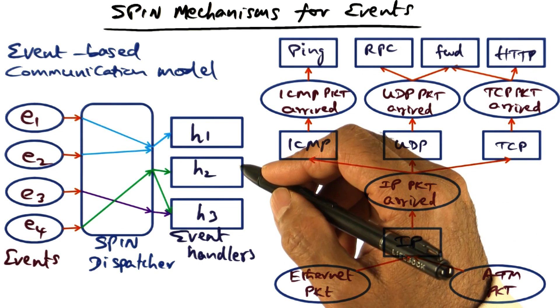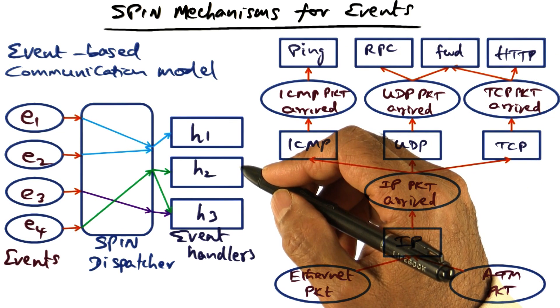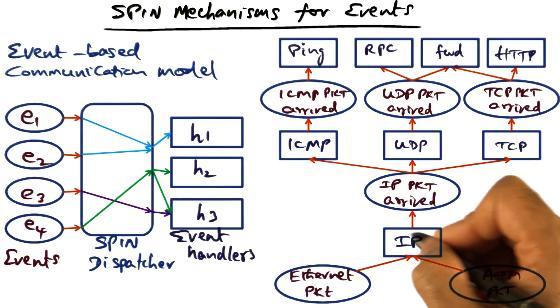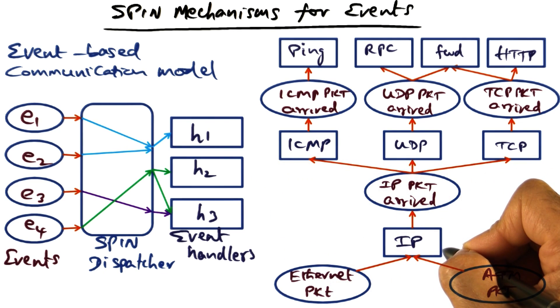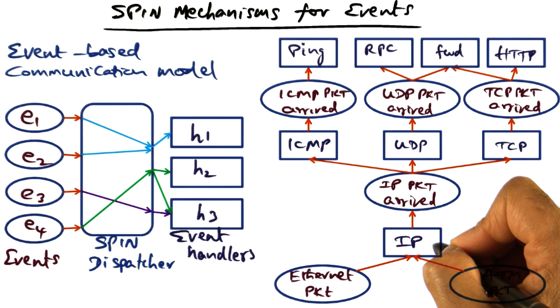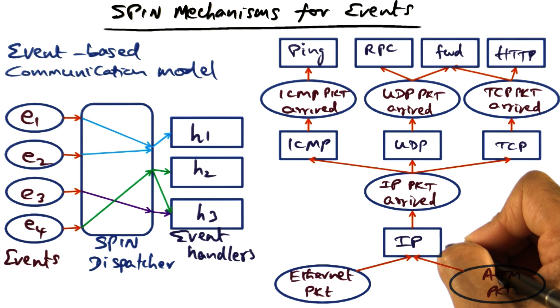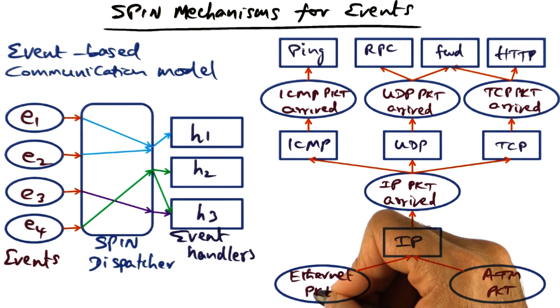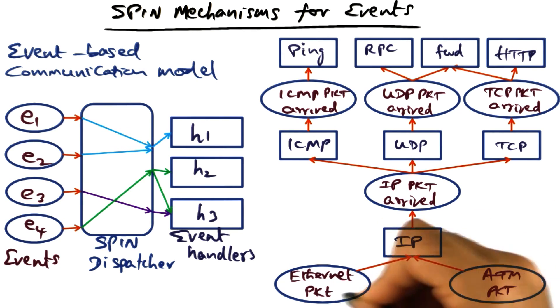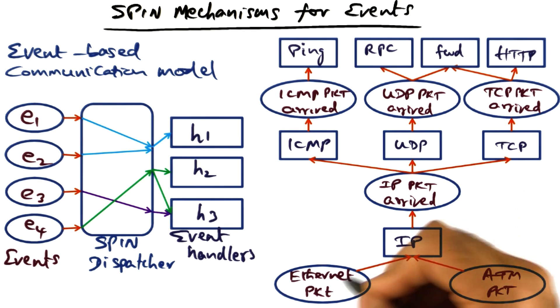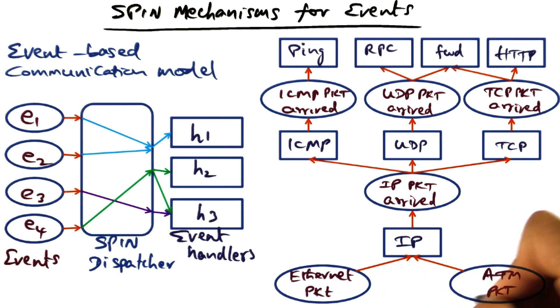Event handlers may also be specified with guards for finer-grain handler execution. For example, this handler could specify that it should only be executed when IP packets arrive. That's a guard that the IP packet handler could specify so that even though different kinds of packets may arrive on these interfaces, this handler will only get triggered when the packet that arrived is an IP packet.